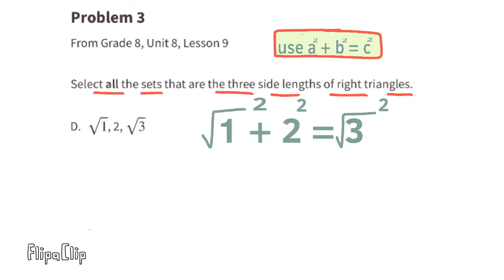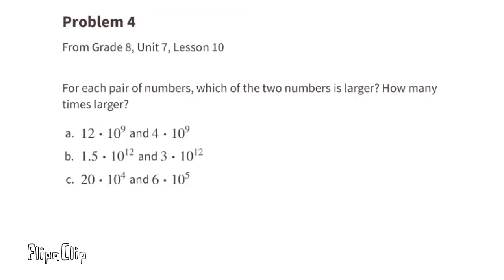For set D, the side lengths are 1, 2, and √3. One squared is 1, two squared is 4, and √3 squared is 3. Since 1 plus 4 is 5 and 5 does not equal 3, this cannot be a set of side lengths for a right triangle.